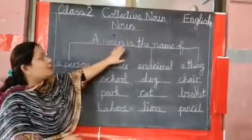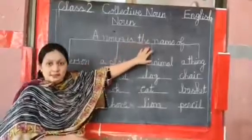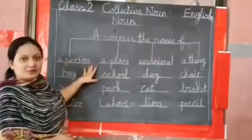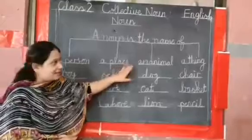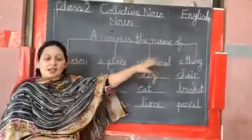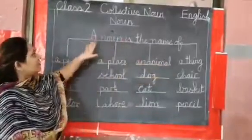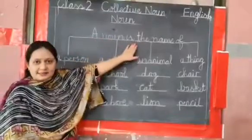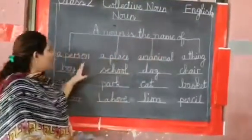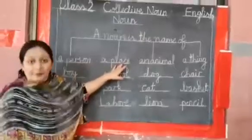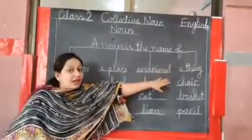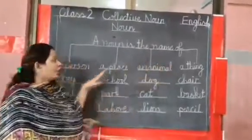A noun is the name of a person, a place, an animal, a thing. Once again, a noun is the name of a person, a place, an animal, a thing. Now it's your turn.